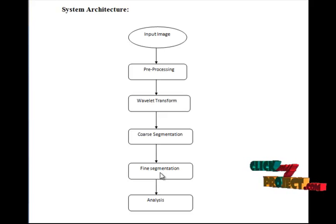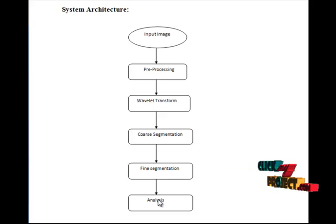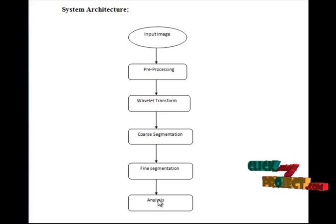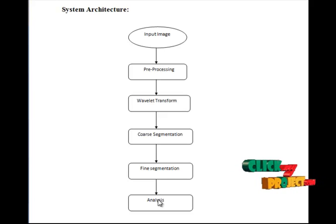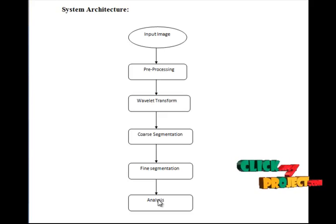After fine segmentation, we get the tumor as an output. In the analysis stage, we analyze the tumor — finding the area, perimeter, and center point — and the number of tumors is also identified. For identifying these, we use the MATLAB function region props.